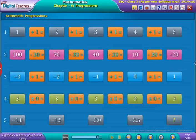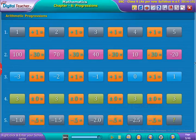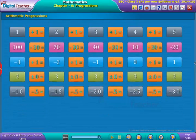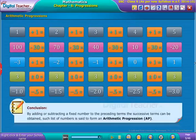Similarly, in the fifth set, each term is obtained by adding minus 0.5 to the term preceding it. Therefore, from observing the above lists, the conclusion is that by adding or subtracting a fixed number to the preceding terms, the successive terms can be obtained.